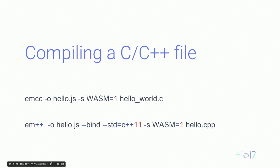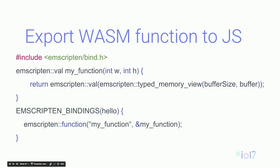hello.js contains all the glue code to call your module. If you want to pass data in and out, you can use a thing called embind. In this case we're exporting a function called myfunction, which returns a typed memory view. To JavaScript, that looks like a typed array. The beauty of this is that when you pass memory from C++ back into JavaScript land, there's no copying — the typed array is mapped directly to the WebAssembly module heap memory.